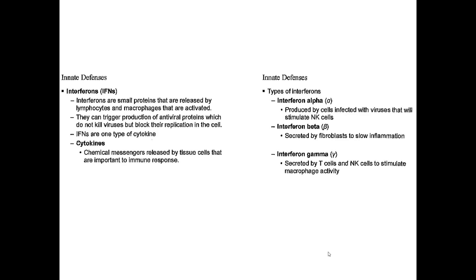Interferons are one type of cytokine — chemical messengers released by tissue cells that are very important to the immune response. Alpha interferons are produced by virus-infected cells and stimulate natural killer cells. Beta interferons are secreted by fibroblasts and help slow down inflammation. Interferon gamma is secreted by T cells and natural killer cells, and stimulates macrophage activity — the large eating cells.